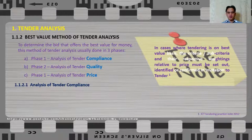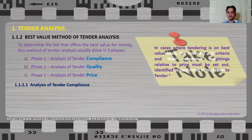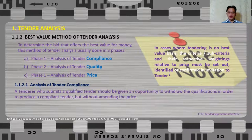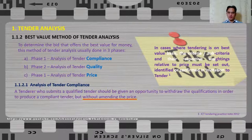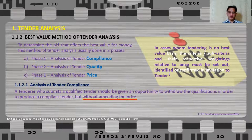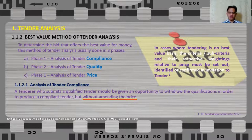What are we looking for when we analyze tender offers for compliance? A tenderer who submits a qualified tender should be given an opportunity to withdraw the qualifications in order to produce a compliant tender, but without amending the price. For example, if a contractor wrote 'not included' against one of the requirements, the tender offer becomes non-compliant because it cannot be compared to other complete offers on a like-for-like basis.